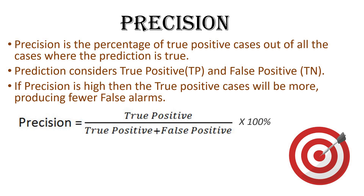Consider a situation where the machine is predicting whether there will be rainfall or not. If it correctly predicts rain and it is actually raining, that is a true positive case. But in some cases the machine fails to predict rain when it is actually raining — prediction is 'no' and reality is 'yes.' These are false negative cases, and they are not considered in precision.